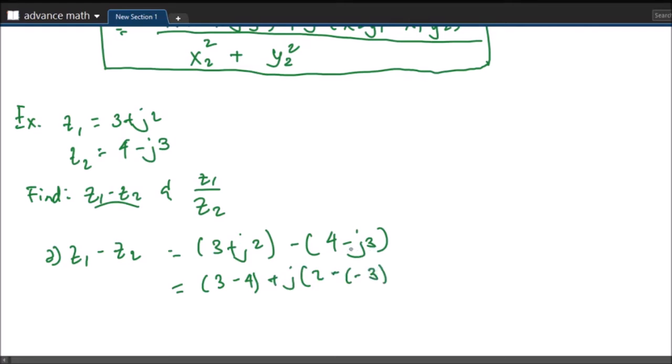So this is minus J of 3. We will put bracket on that. So it will be negative 1 plus J5. And this is our answer.